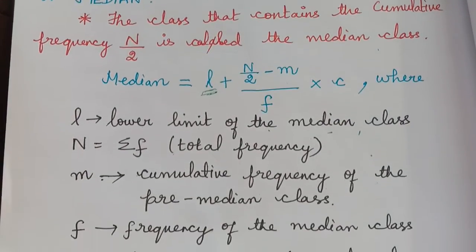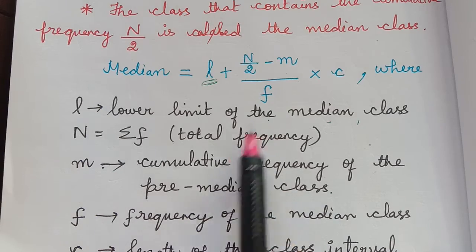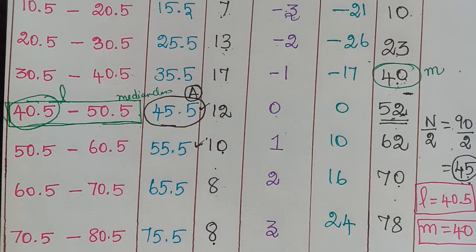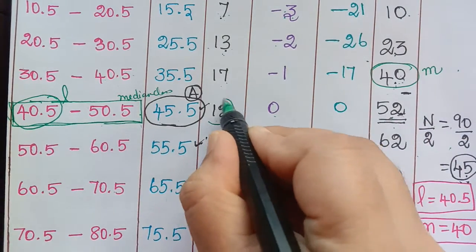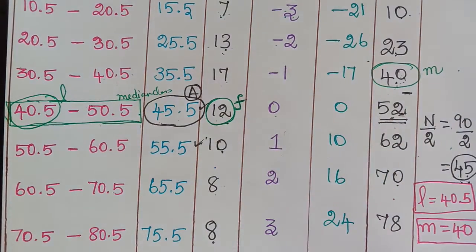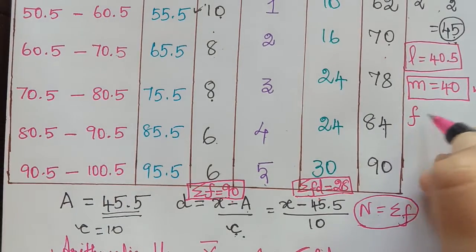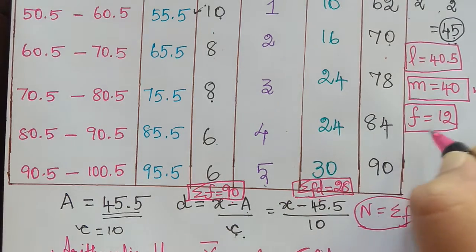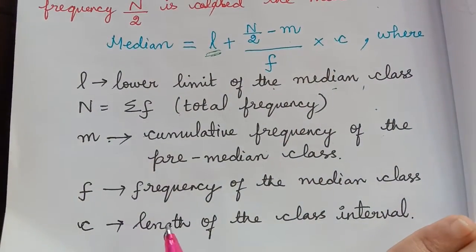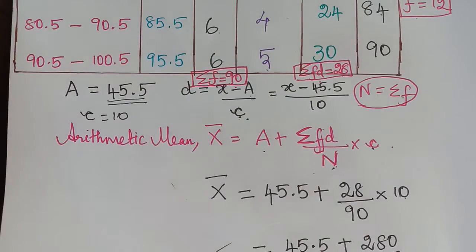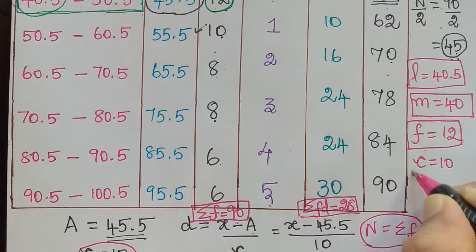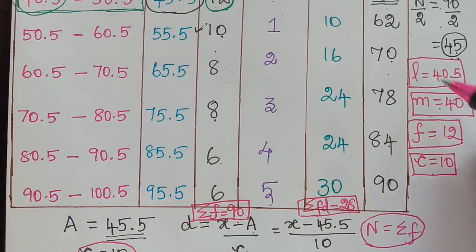Next in the formula we have f in the denominator. Here f is the frequency of the median class. The median class has a frequency of 12, so f equals 12. We also have c, which is the length of the class interval. The class interval length is 10, so c equals 10. Now we substitute all these values into the formula to find the median.